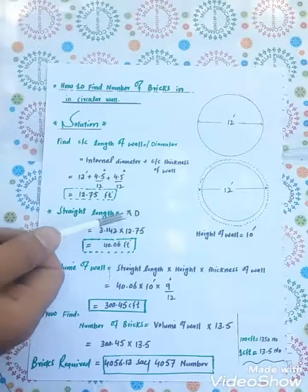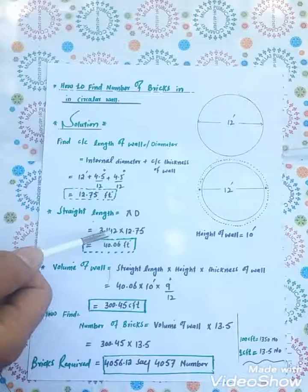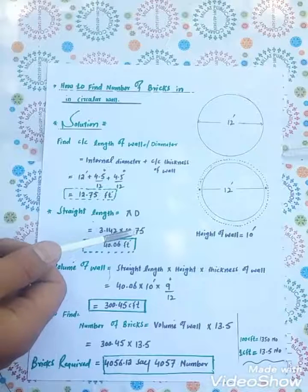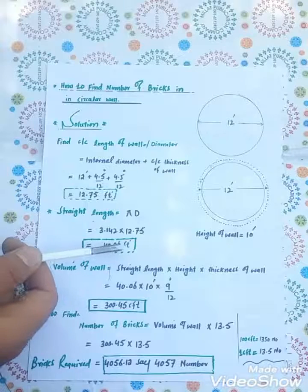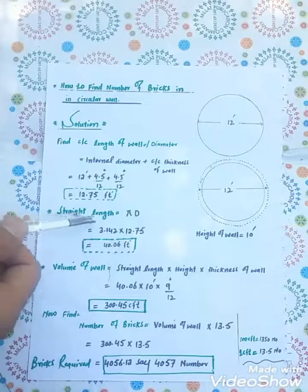Formula used: πD. Put the value in this formula: 3.142 × 12.75, which equals 40.06 feet. This is the straight length.